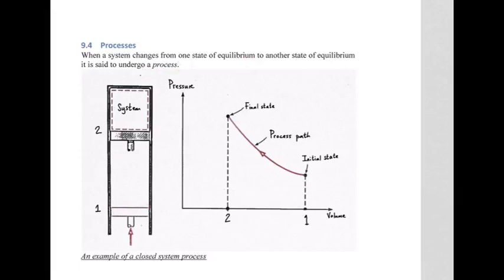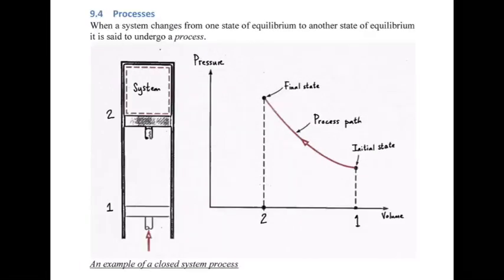Here's an example of a process. We have the same piston-cylinder arrangement with a closed system boundary, and on the right-hand side we have a graph plotting pressure versus volume — a PV diagram. At position one, when the piston is down, we have a large volume, on the far right of the graph. We then apply a force to the piston, squeezing the volume into a smaller space and thereby increasing the pressure. Point two is at a higher pressure and a lesser volume. The route taken from point one to point two is called the process path, and we are undergoing a process — this is an example of a closed system process.